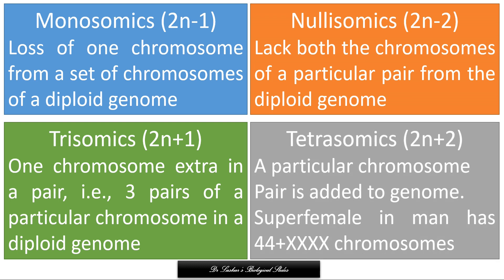Tetrasomics are represented as 2n+2. In tetrasomics, a particular chromosome pair is added to the genome, meaning one or more particular chromosomes are represented by 4 copies in a diploid organism. For example, superfemale in humans has 44 plus XXXX chromosomes.